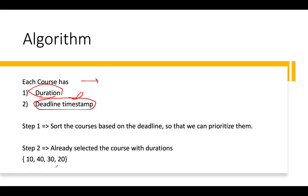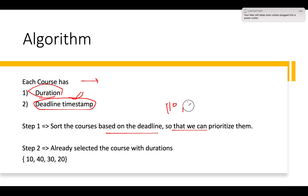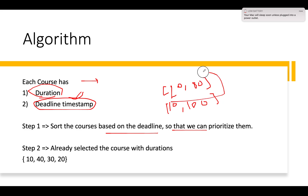There are two key things we'll do. First, we'll sort the courses based on their deadline timestamp so we prioritize courses with lower deadlines first. For example, a course with duration 10 and deadline 100 vs. one with duration 20 and deadline 80 — we prioritize the deadline-80 course first because it has the lower deadline timestamp.